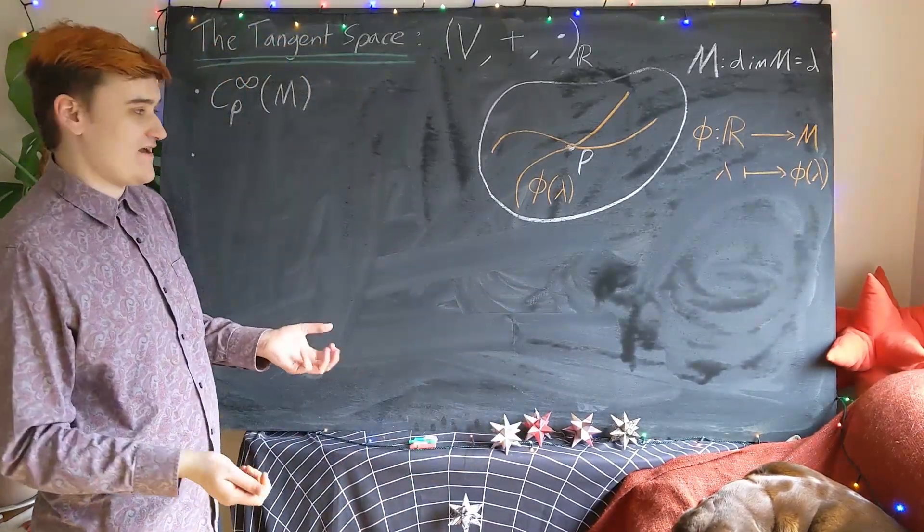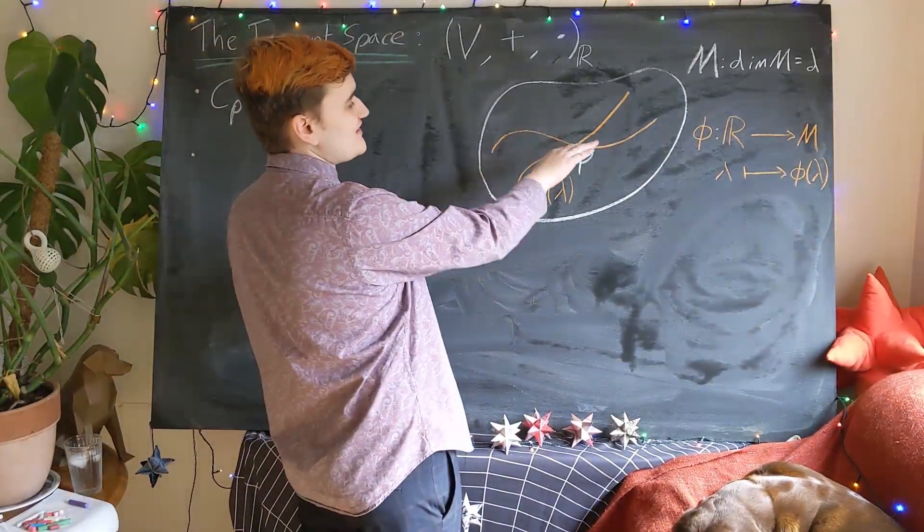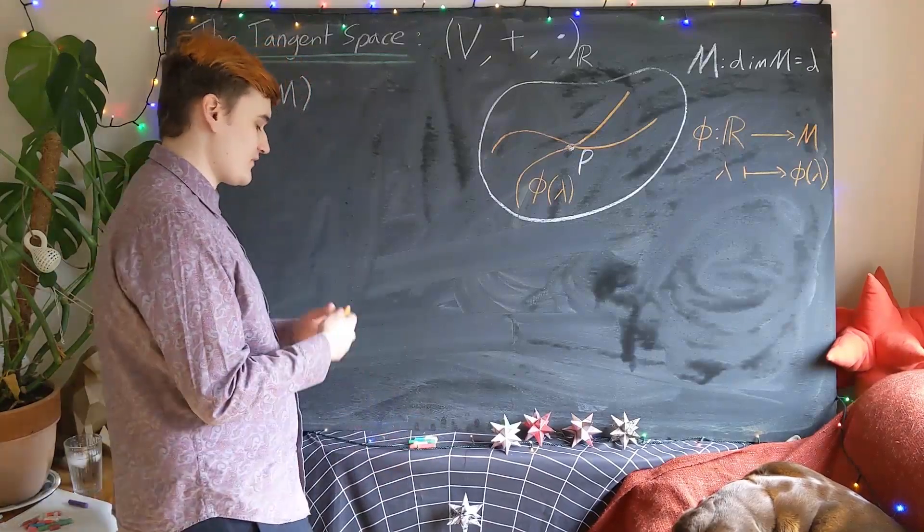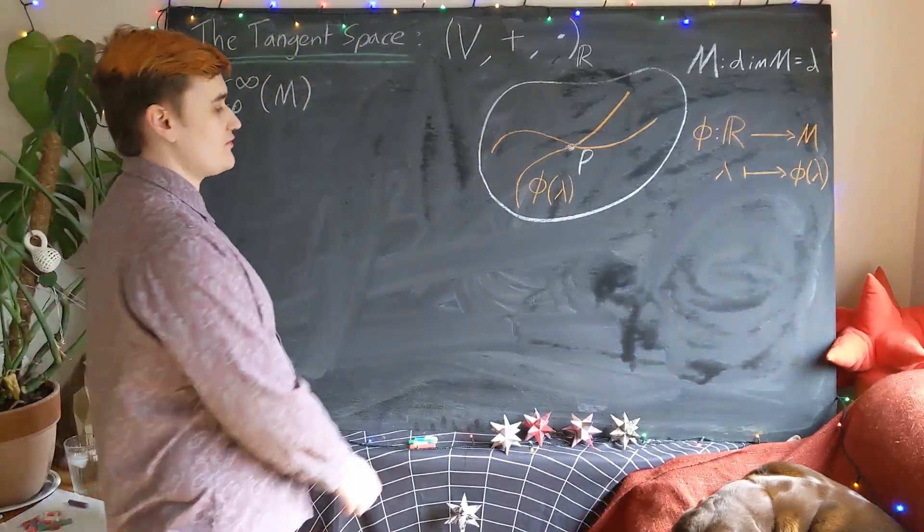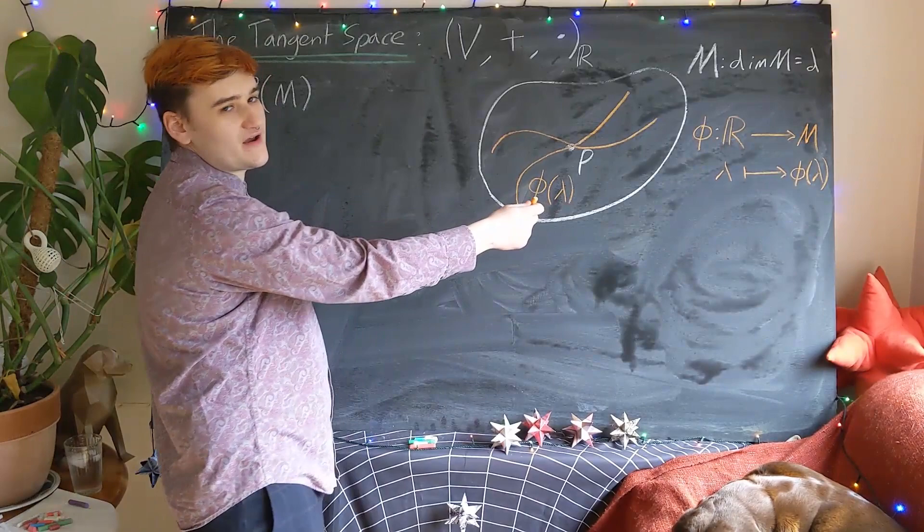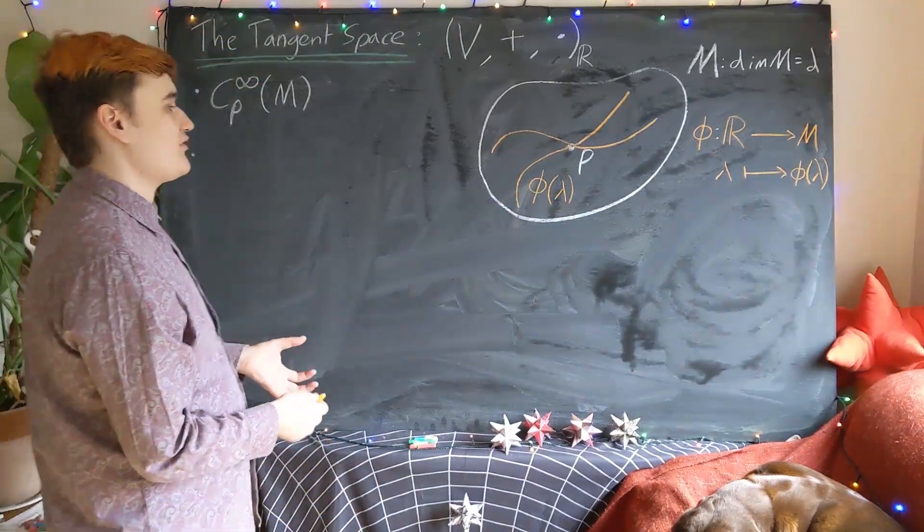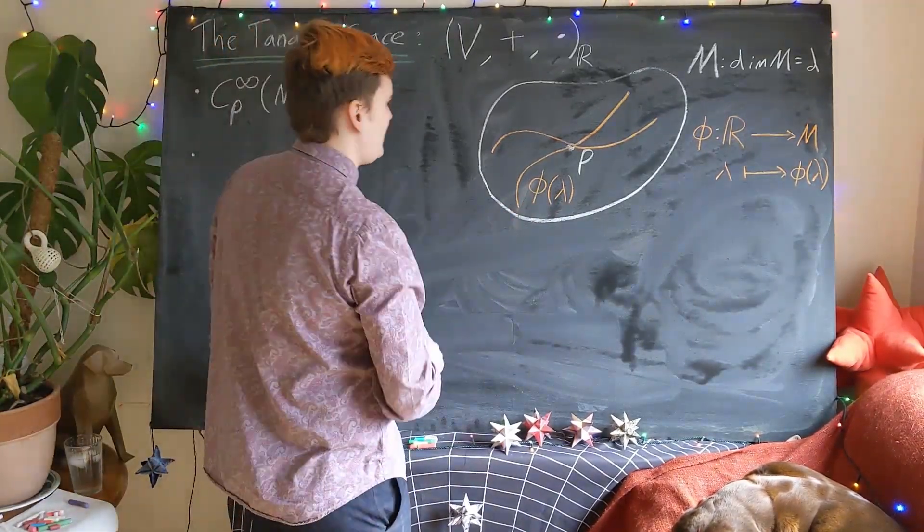Okay, so we still haven't got anywhere yet. We've just defined our set of all possible smooth curves. And now what we want to do, because these curves are parametrized, we want to consider taking the parameter derivative of each curve.